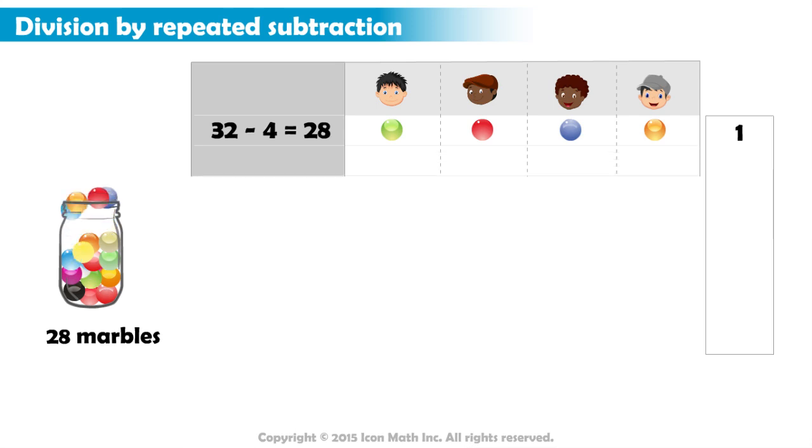Now, we take another four, and that leaves us with 24 marbles. We also write one across the margin, to show that every player got another marble.